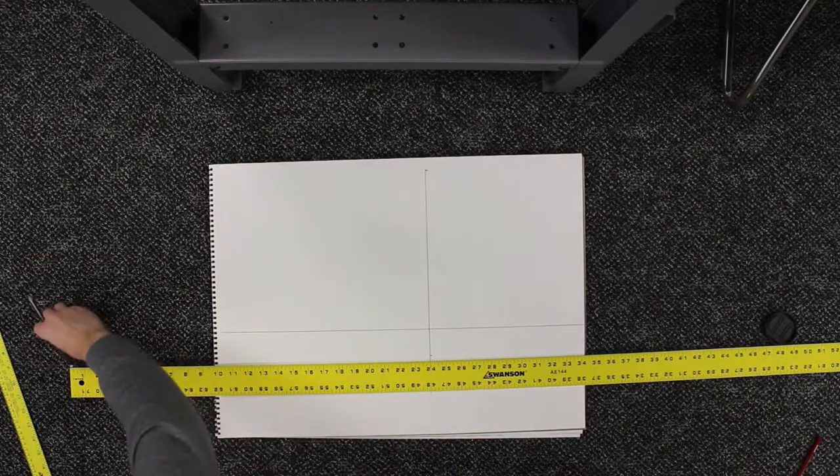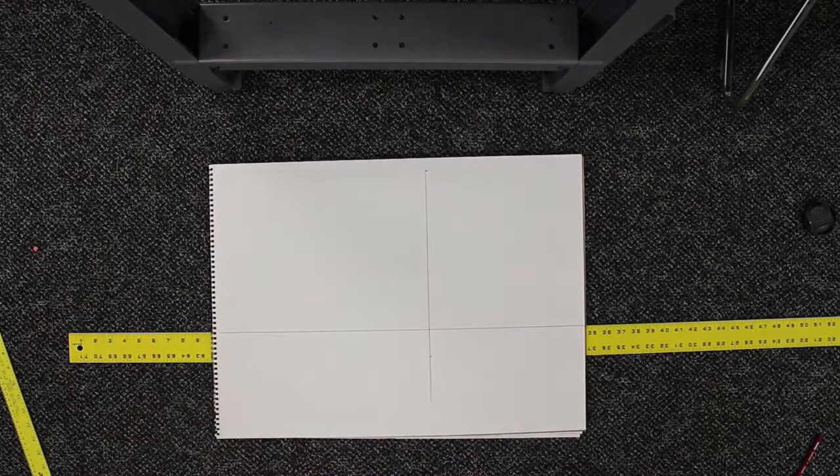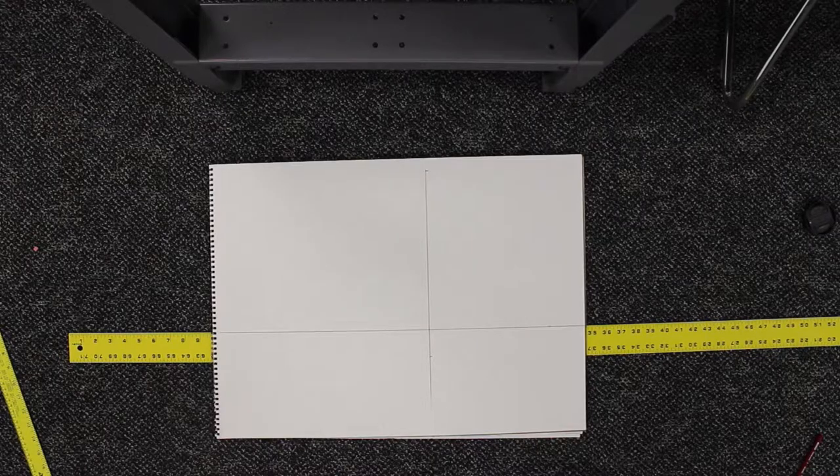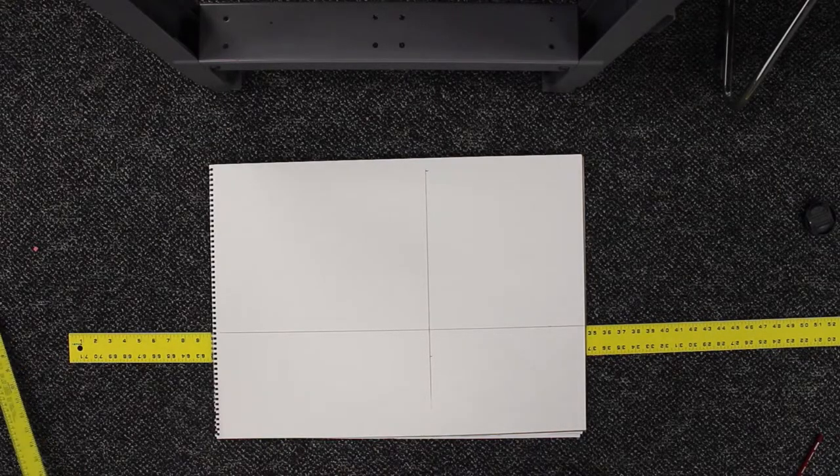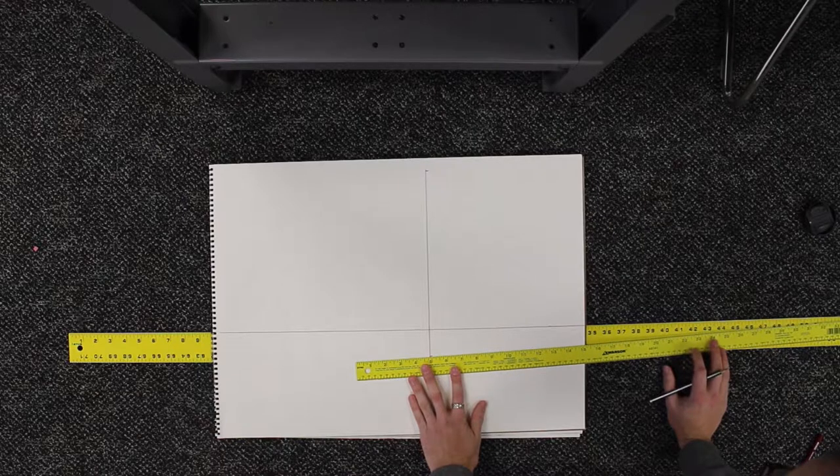These should be 48 inches apart if you get a large ruler or tape measure. Another thing you can do is if you have a big ruler, you can put it behind your paper while you do your initial setup.